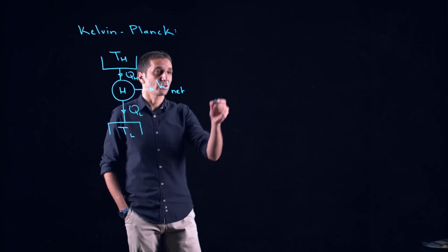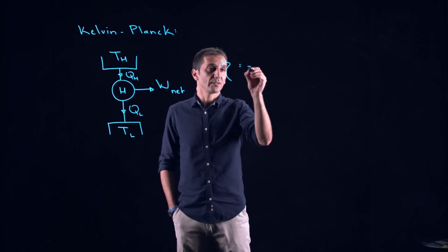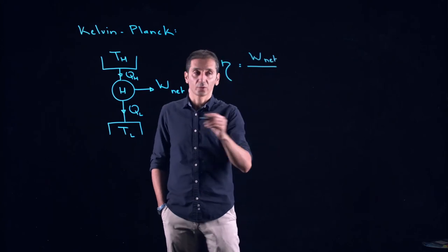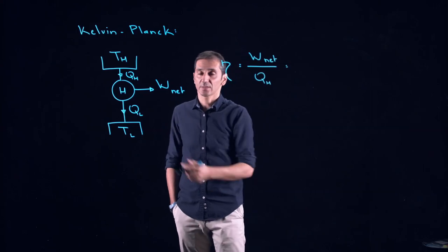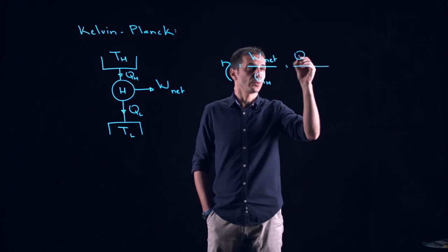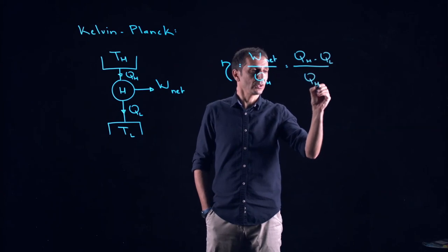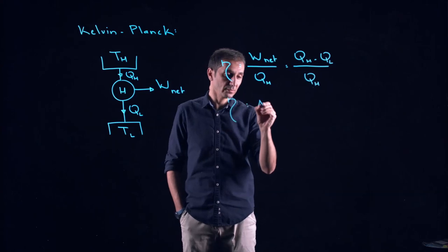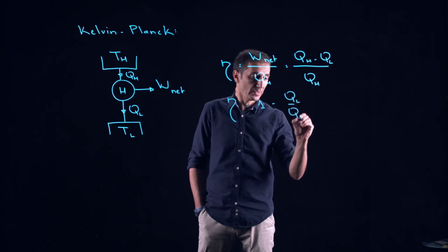Now in terms of thermal efficiency, this means that I can write the thermal efficiency for this heat engine as the work net over QH. But the first law of thermodynamics is telling me that the work net is equal QH minus QL. So QH minus QL over QH, and therefore my thermal efficiency for this heat engine I can write it as 1 minus QL over QH.